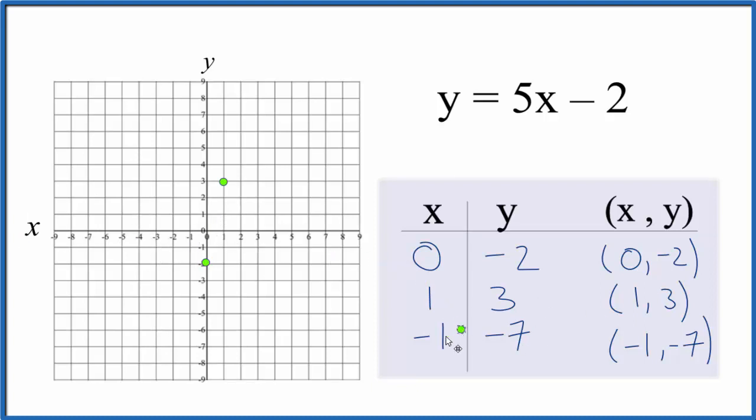X is negative 1, y is negative 7. So negative 1 down to negative 7, and we can see they're in a line there. Let's put a line through them and let's put arrows to show it goes to infinity. And that's the graph for y equals 5x minus 2.